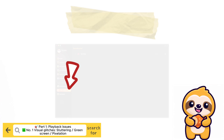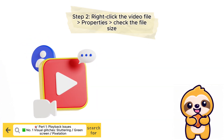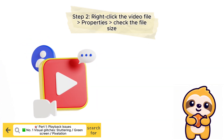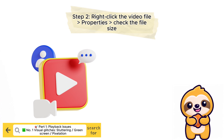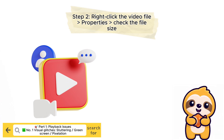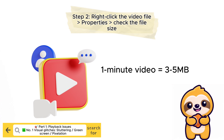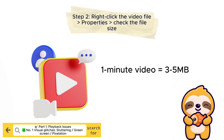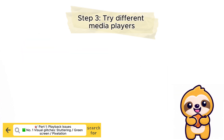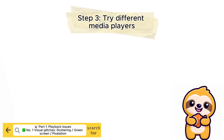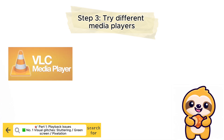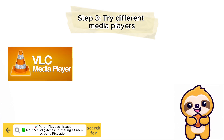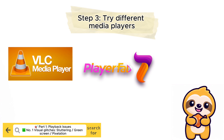Then right-click on the video file, open Properties, and verify the file size. As a general reference, a one-minute video should be approximately 3 to 5 megabytes in size. If the file size looks correct but the video still plays abnormally, try opening it in a different media player. VLC is our top recommendation, followed by PlayerFab and your system's default player.